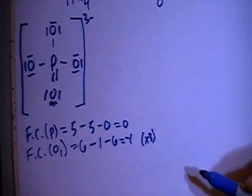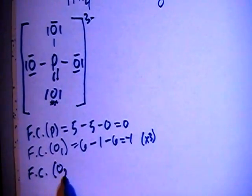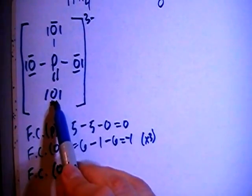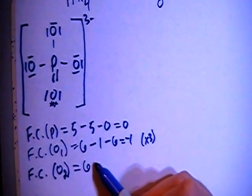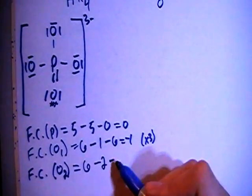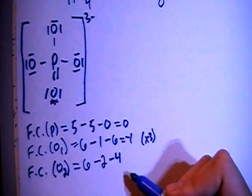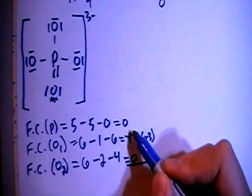And now we can do the formal charge of the oxygen with a double bond, O sub 2. That is going to be 6 valence brought in minus 2 bonds minus 4 non-bonding electrons. And that is going to give us a formal charge of 0. So let's sum all these up.